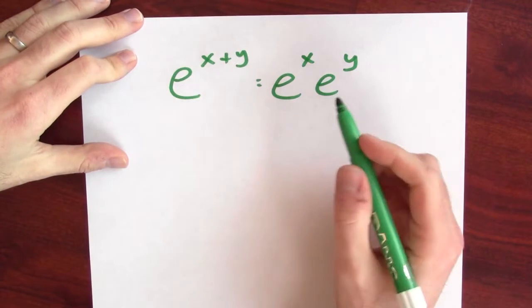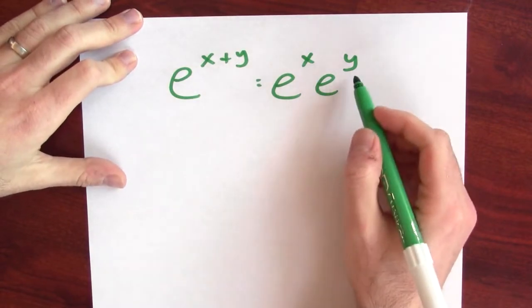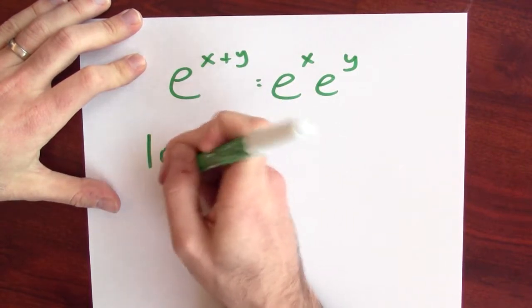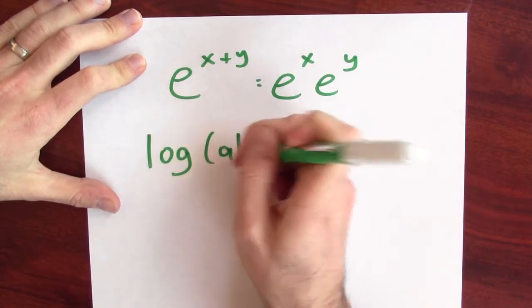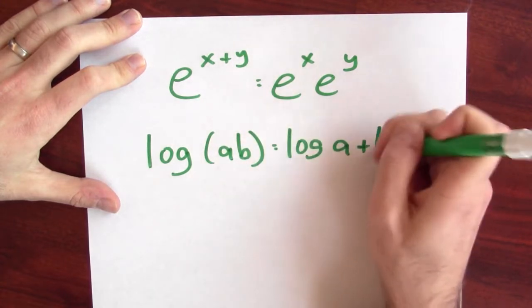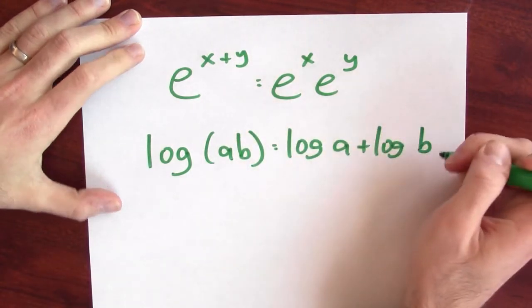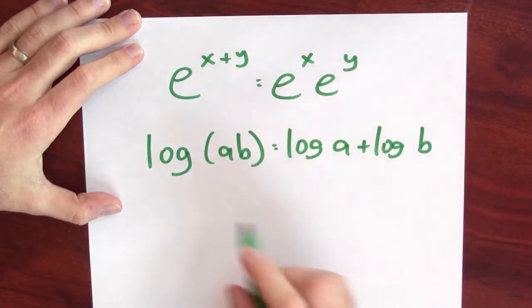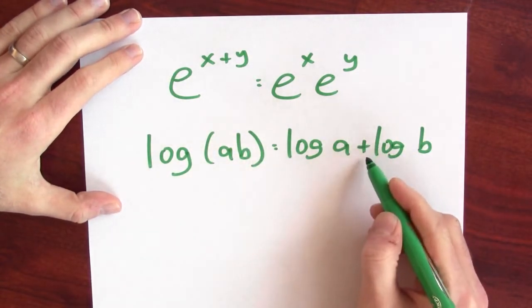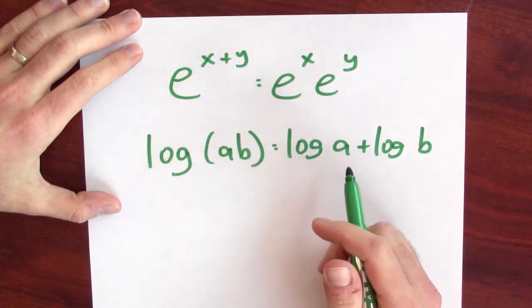These logs, or logarithms, are super important for a ton of reasons. Take a look at this. Since e to the x plus y is e to the x times e to the y, this is a property of exponents. There's a corresponding statement about log: log of a times b is log of a plus log of b. Or a shorthand way to say that is that logarithms transform products into sums. This is a big reason why we care so much about logs.